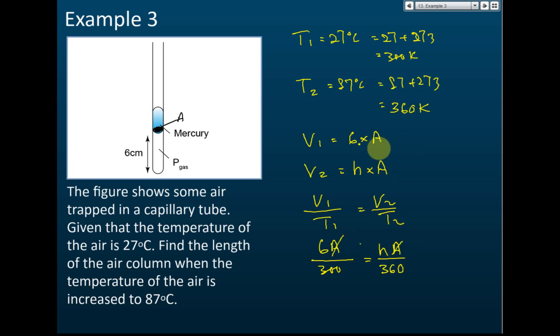Now the A will cancel off. So for this one, if you don't want to write 6 times A, you can straight away write 6 cm. This is h cm also, because later on the A will cancel off. I put A just for you to understand - that's how we find the volume of the gas. Because sometimes some students say, 'Hey, this is supposed to be the volume, why just give me the length 6 cm?' The volume is 6 cm multiplied by the cross-sectional area, but the A later on will cancel off.